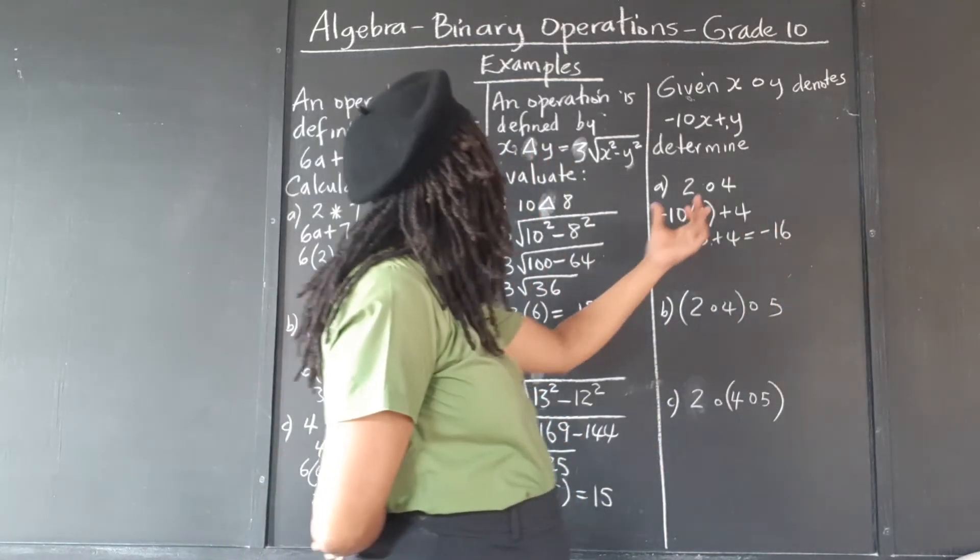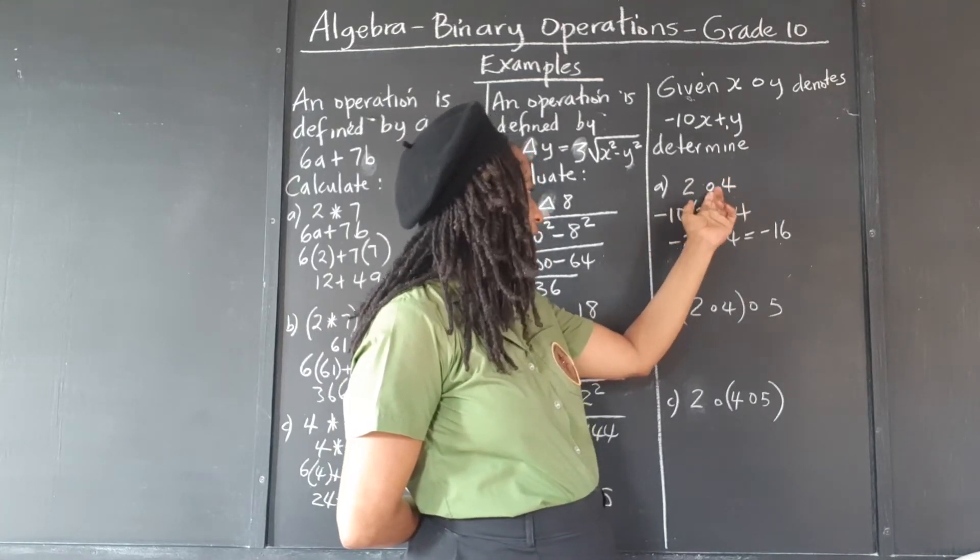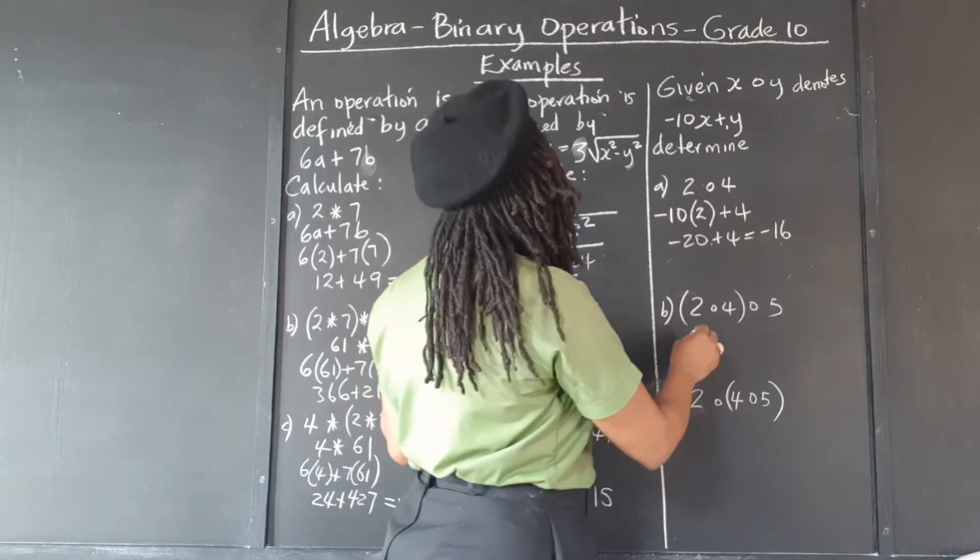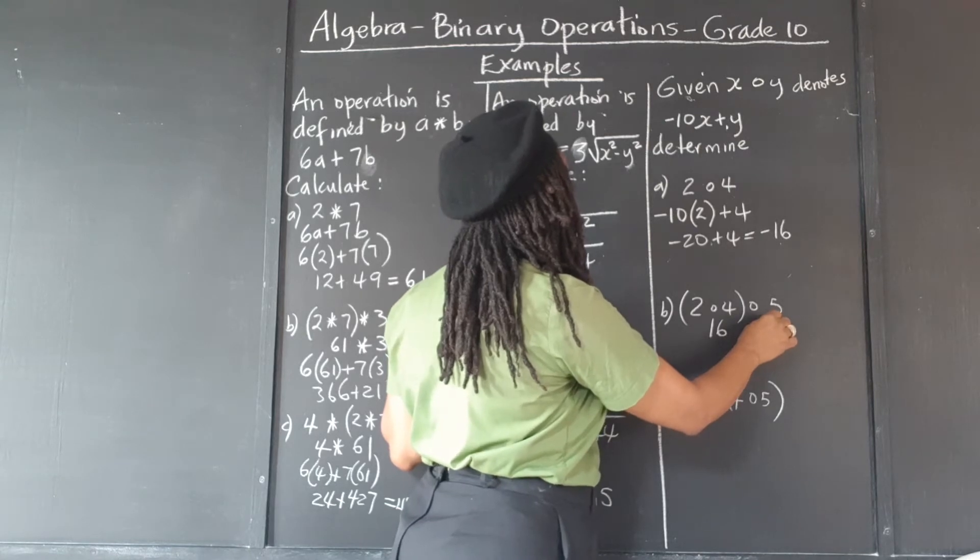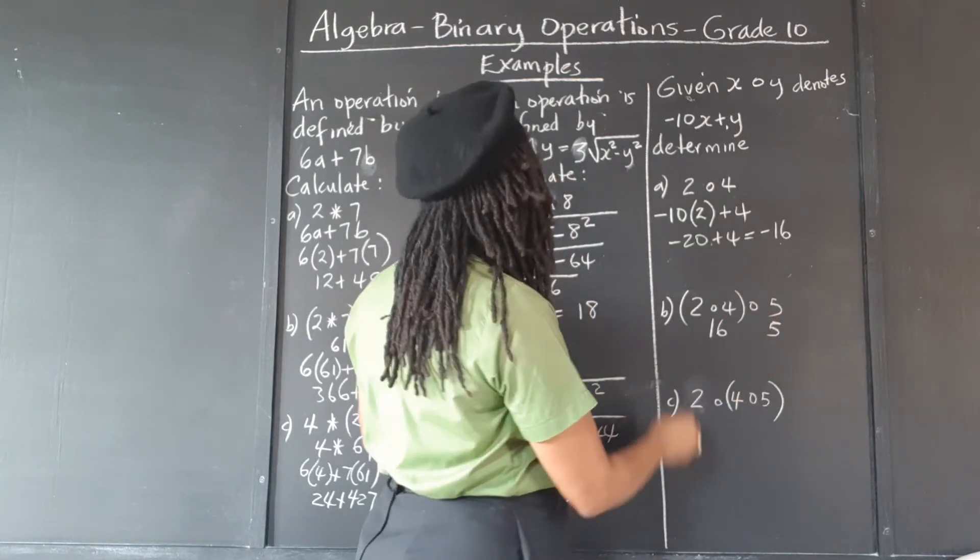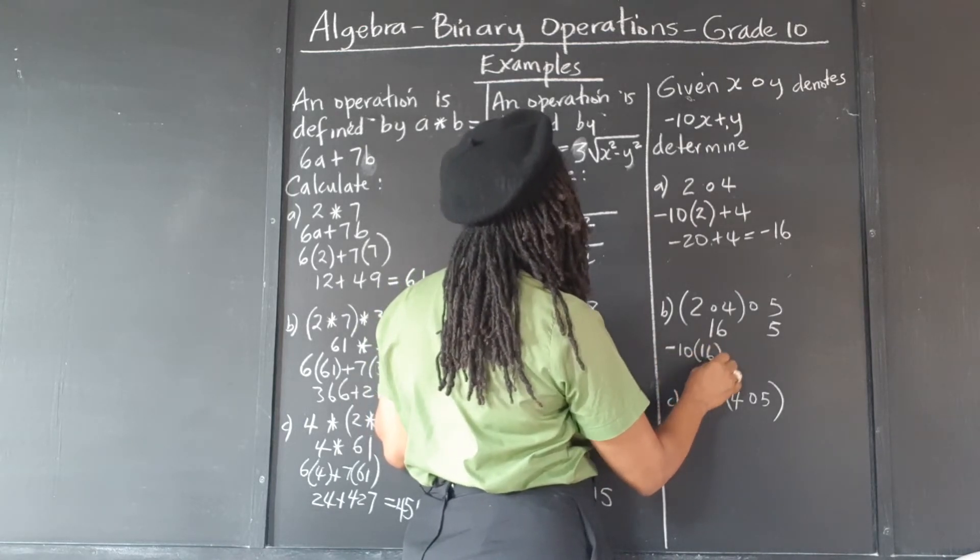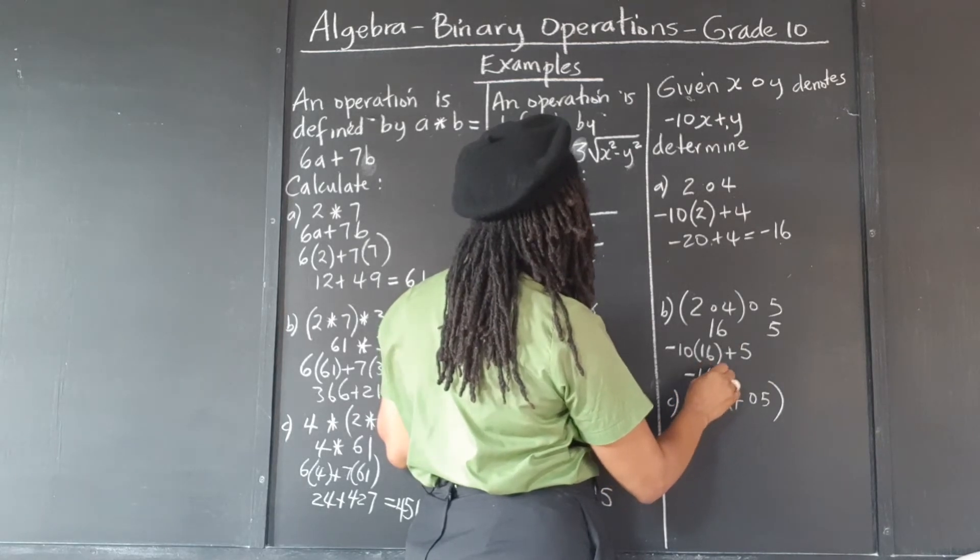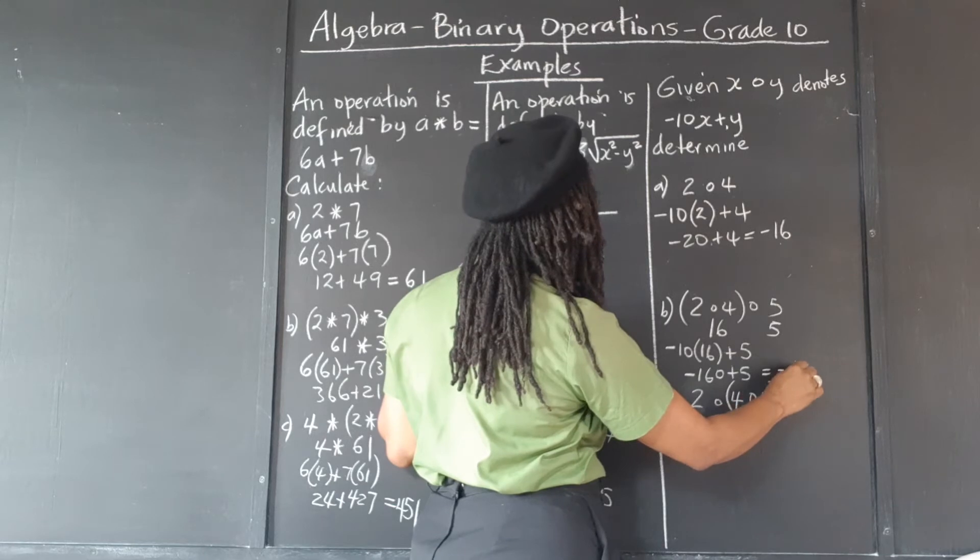Alright, so since we already worked the 2 circle 4 to this symbol 4, and we know that's negative 16. So now the negative 16 is going to be substituted for x. And the 5 is substituted for y. So it would be negative 10 times negative 16 plus 5, which is negative 155.